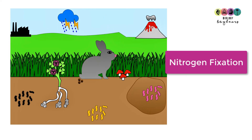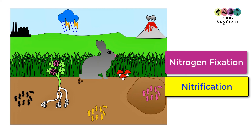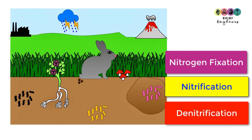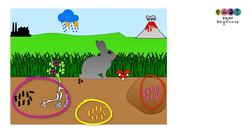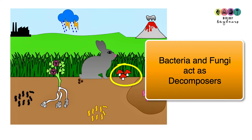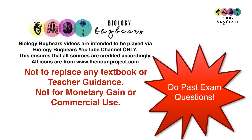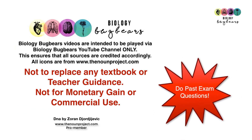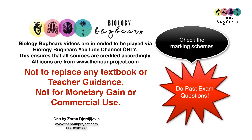When we consider the nitrogen cycle, we consider nitrogen fixation, nitrification, and denitrification — three processes where different types of bacteria play a hugely important role. We also have to consider decomposers, bacteria and fungi, which play a role in breaking down dead organic matter, and this is hugely important in the nitrogen cycle as well. Nitrogen cycle questions can be tough, so the only way to really prepare is to do past examination questions and check the answers with the marking scheme. Best of luck.